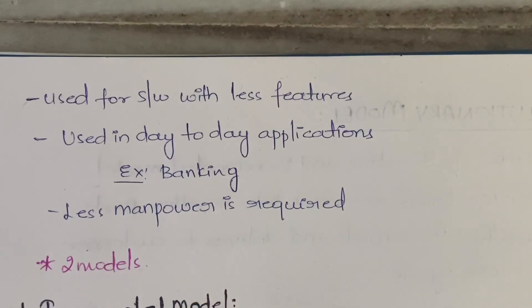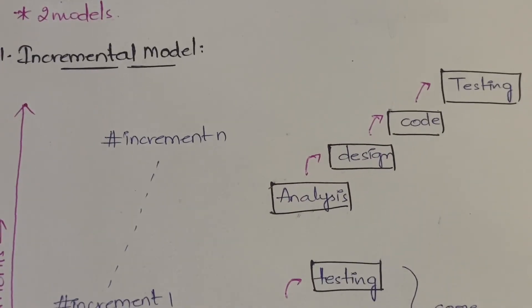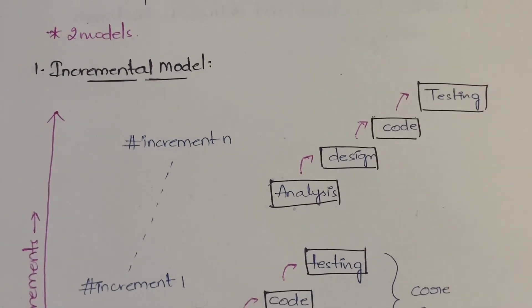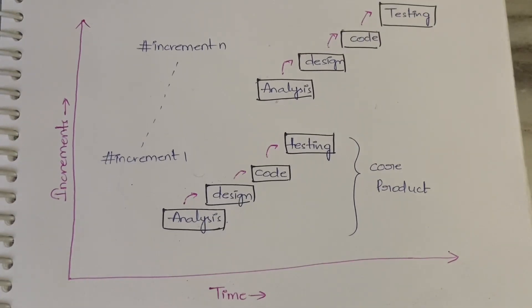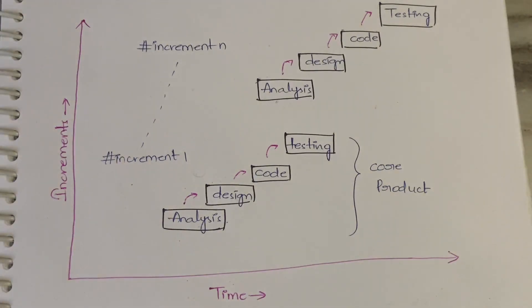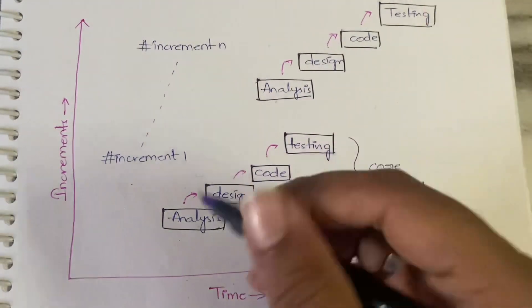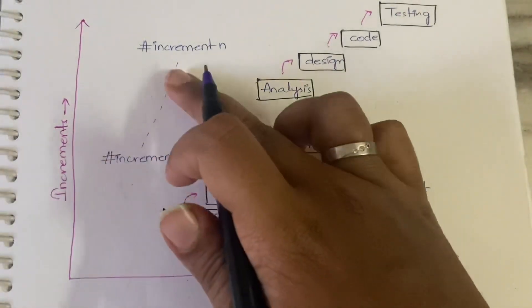Within the incremental model, there are actually two sub-models: incremental and RAD. RAD stands for Rapid Application Development — I'll explain both. In the incremental model, the first step is the core product, which is the initial basic software. In each increment — increment one, increment two, increment three, up to increment N — you will have all four steps: analysis, design, code, and testing.